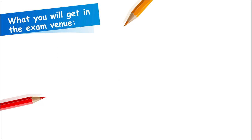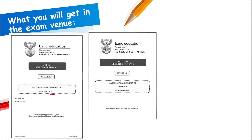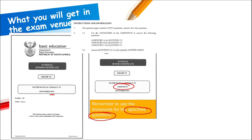In the exam venue, you'll receive a question paper. You'll most probably also get an addendum containing annexures. Remember to use the annexures for the specified questions — for example, Annexure A for question 2.2, Annexure C for question 4.3. Make sure when answering those questions you are referring to the annexures and have that booklet open next to you.